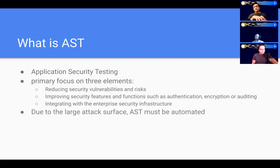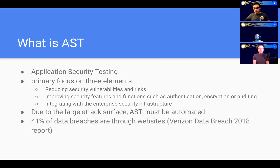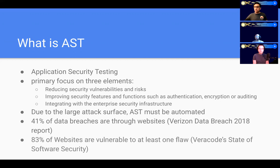Nowadays, there's just so many vulnerabilities out there that AST must be automated. Automation is definitely the key here. So let me give you a couple statistics. 41% of all data breaches, according to a Verizon Data Breach report, are through websites. And 83% of all websites currently are vulnerable to at least one flaw, according to the Veracode State of Software Security. This just goes to say that you have to continuously update your website.